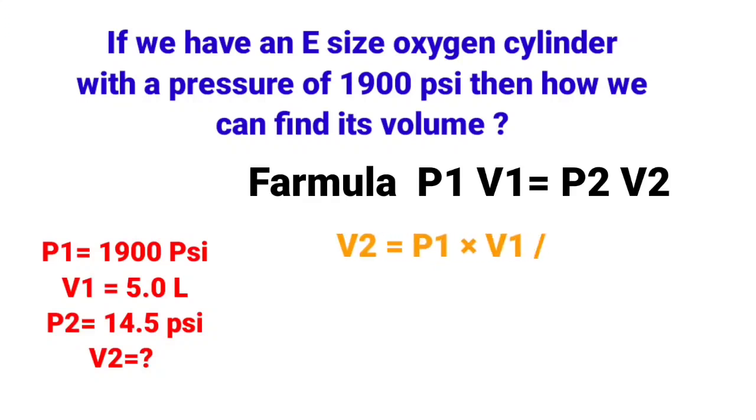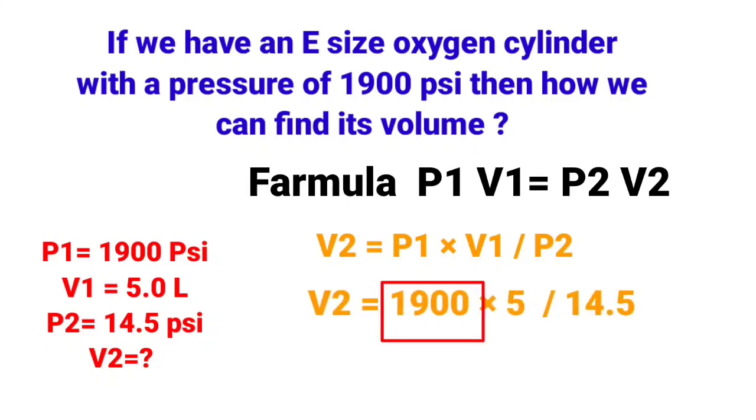Now put the values. V2 is equal to P1, which are 1900 psi, multiply by V1, which are 5 liters, divide by atmospheric pressure which are 14.5 psi. After the calculations, the answer is 655 liters. It is the volume of E-size oxygen cylinder if we pressurize it for 1900 psi.